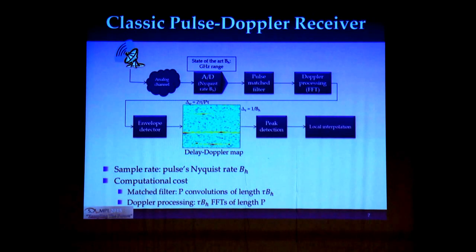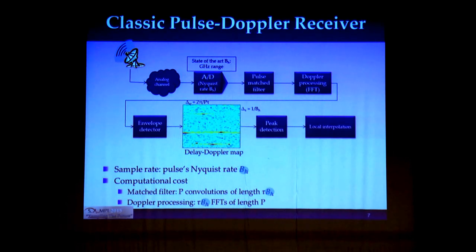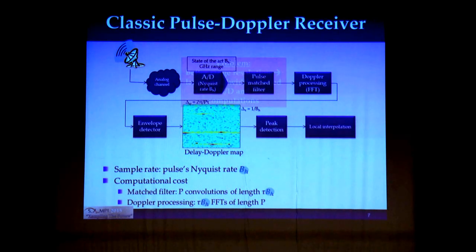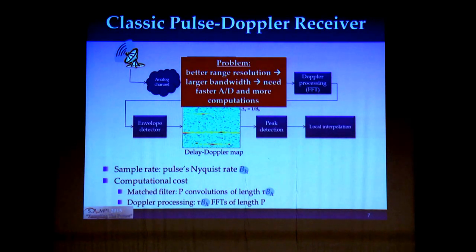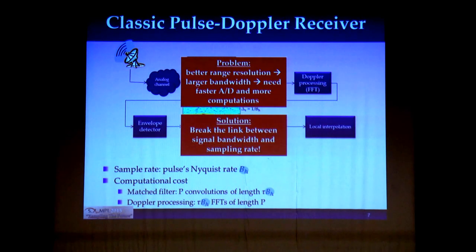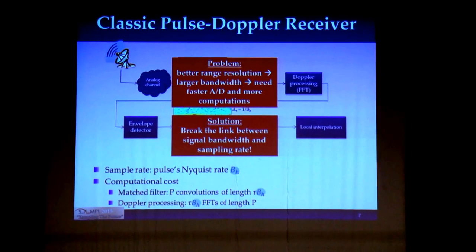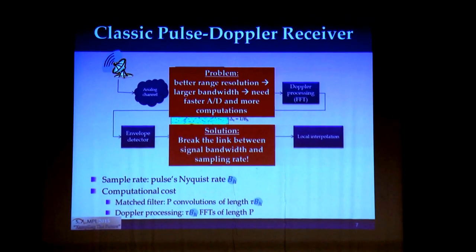Now we compare ourselves to classic radar processing. In a standard radar signal processing scheme, the signal's Nyquist rate dominates both A-to-D requirements and computational complexity. So as radar system bandwidth increases, system complexity increases accordingly. The solution we propose is to break the link between the signal's Nyquist rate and subsequent sampling and processing.